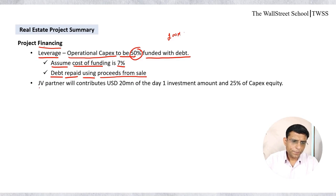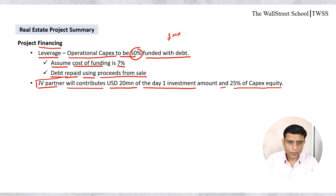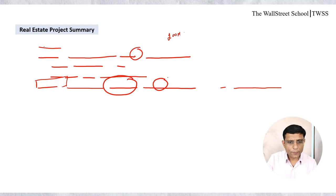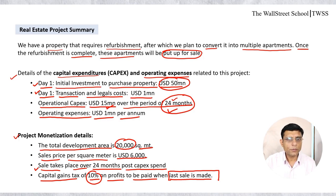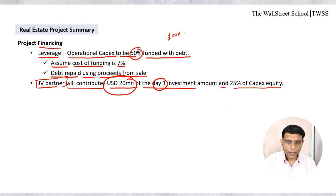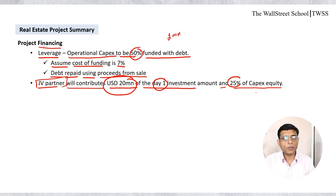The second source of financing is a JV partner. The developer has a joint venture partner who will contribute $20 million of the day one investment. The day one investment was $50 million, so the JV partner contributes $20 million and the developer contributes $30 million. The JV partner will also contribute 25% of the capex equity — that is, 25% of the $15 million operational capex equity portion.